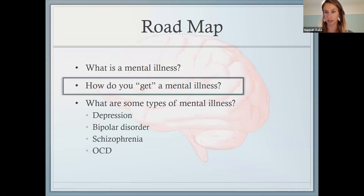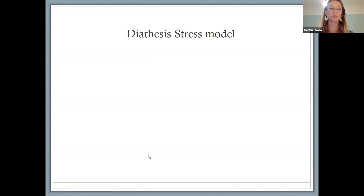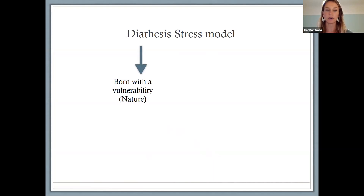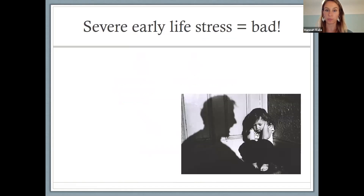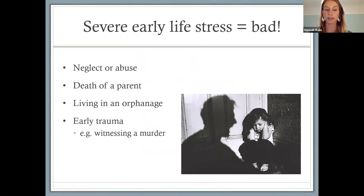We'll next move on to the question of how do you get a mental illness. The general way that we think of getting a mental illness is summarized in the diathesis-stress model. Diathesis is this idea that you come into a situation with a vulnerability, a lot of which is accounted for by your genetics — that's more of the nature side of things. The stress side is that bad things happen — that's the nurture or environmental side of things. Together those two combine to increase risk for psychiatric disorders broadly. One thing we know is that severe early life stress is generally bad: neglect or abuse, the death of a parent, living in an orphanage, or witnessing a murder at a young age — these all increase risk for psychiatric disorders.